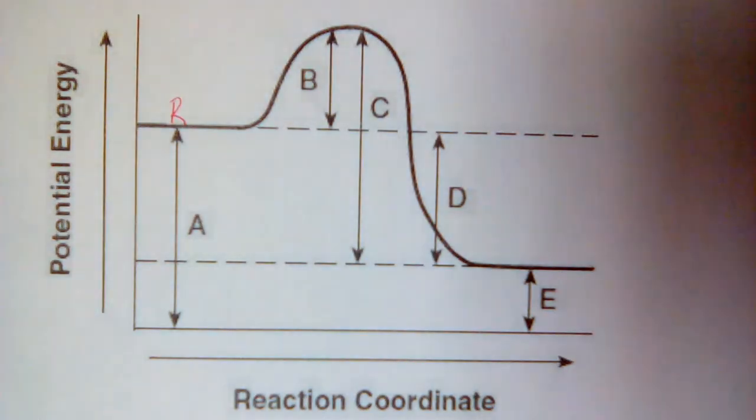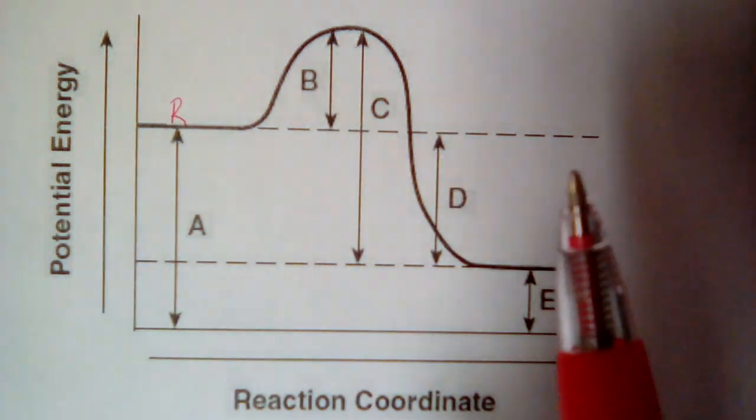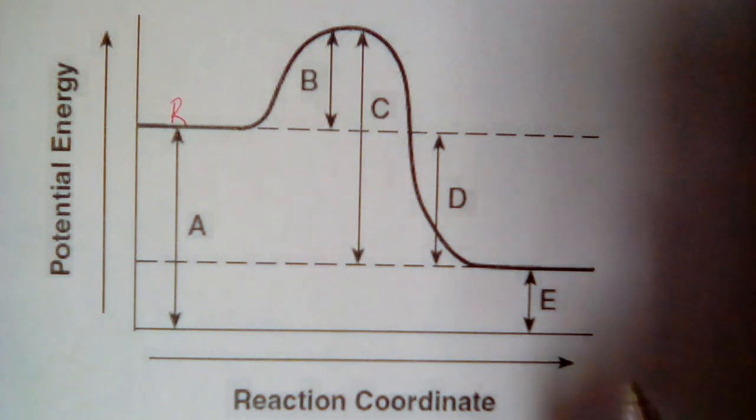Reactants are always on the left side of the potential energy diagram because this is basically the progression of the reaction we have here. As we move along the x-axis, the reaction is moving forward. And you start with reactants. That's why they're always over here on the left side.